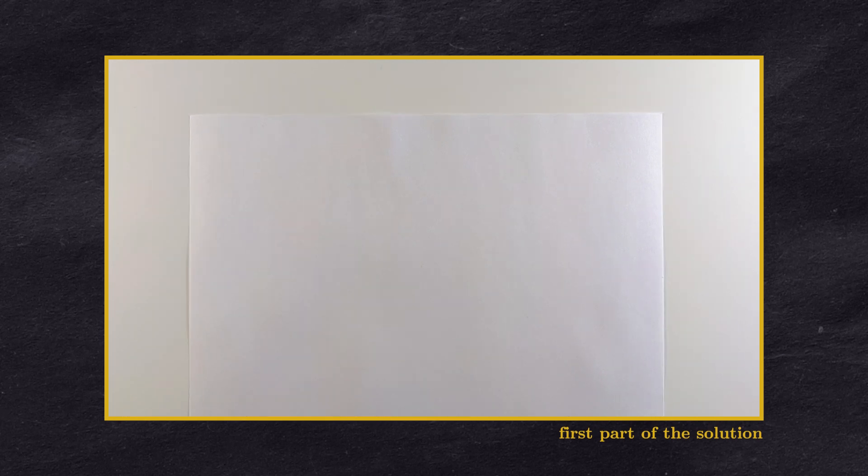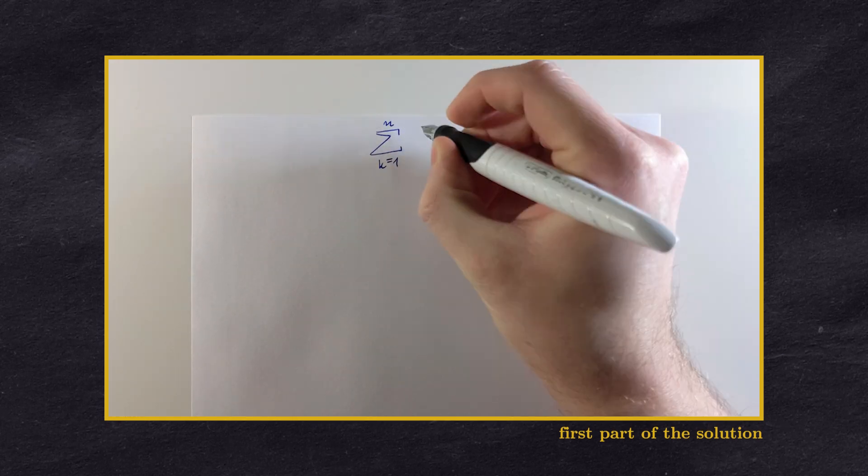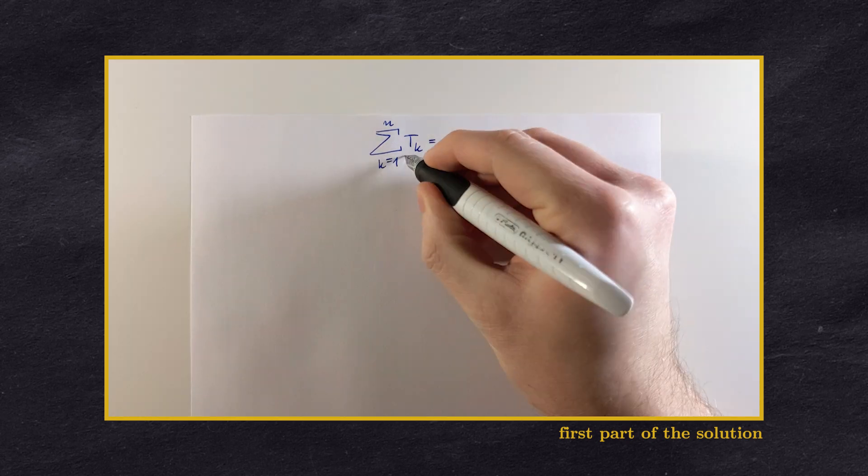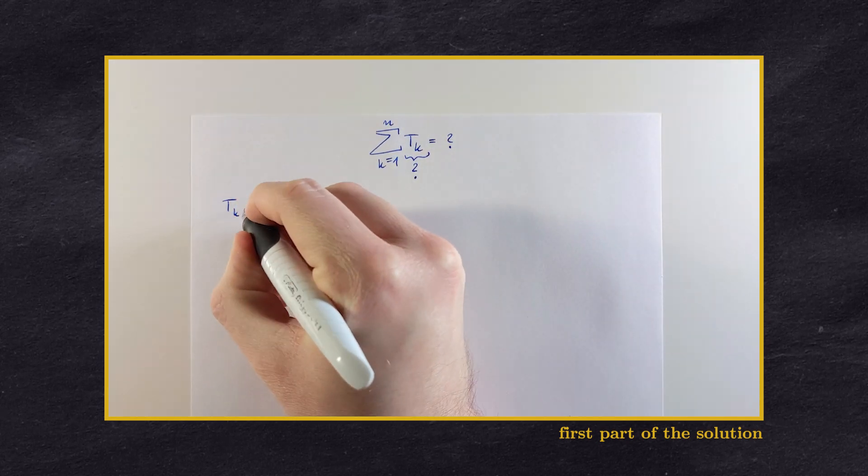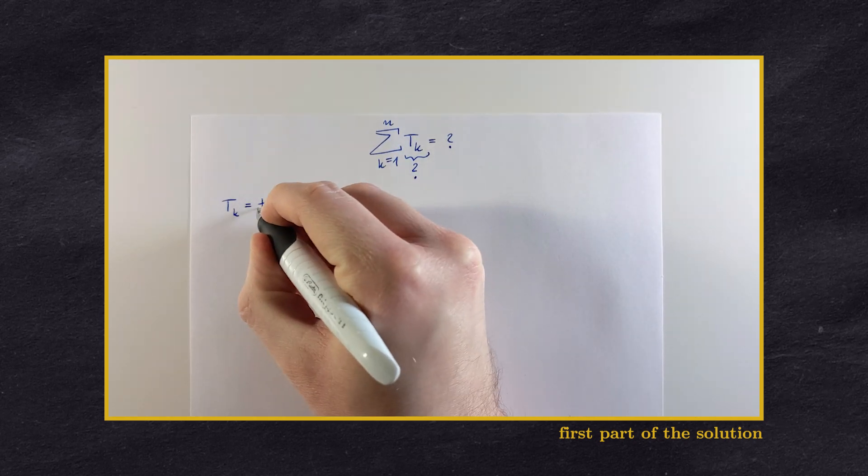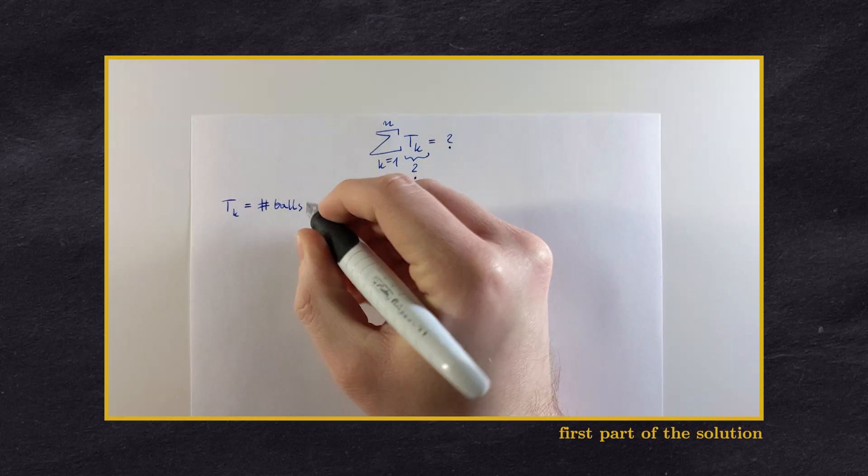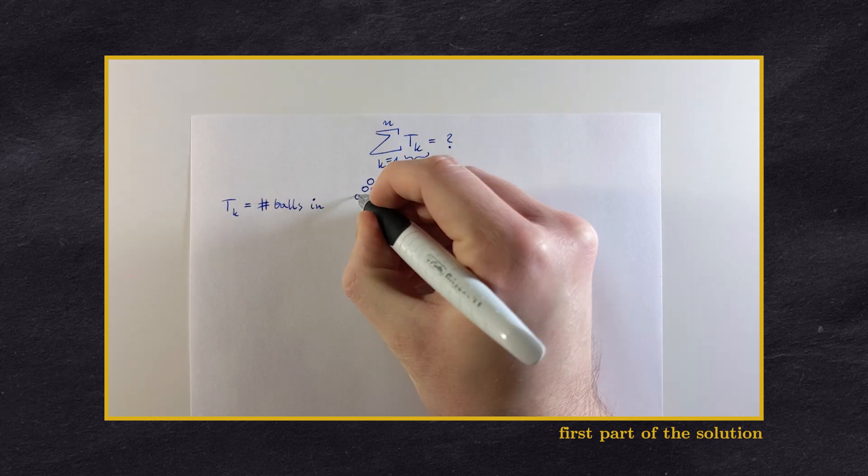Let us start from the inside out by calculating what is the value of tk. Recall that tk, which is the kth triangular number, was defined as the number of balls in a triangle with side length k.